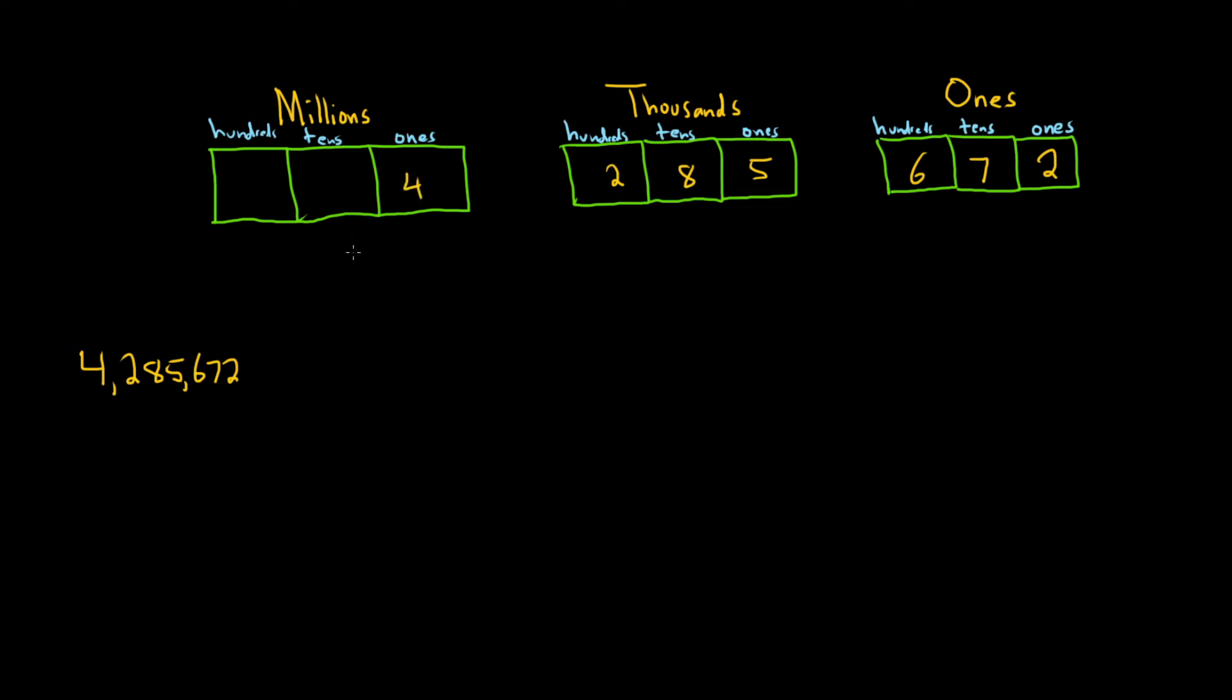And so now we can discuss what's called the place value of each of the digits. So for example, let's focus on the 7 right here. So if you look at the 7, it falls into this category here. So the 7 is in the tens place.